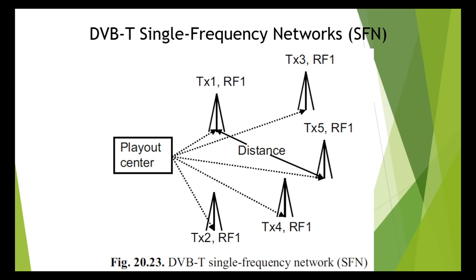Every modulator must perform every operating step completely synchronously with all the other modulators in the network. The same packets, the same bits, and the same bytes must all be processed at the same time. Every DVB-T transmitter site must broadcast absolutely identical COFDM symbols at exactly the same time.